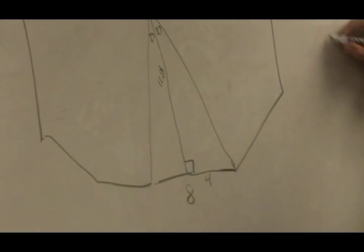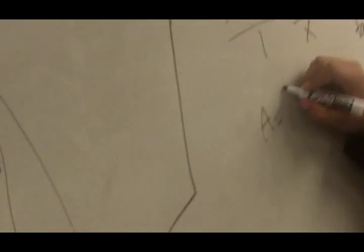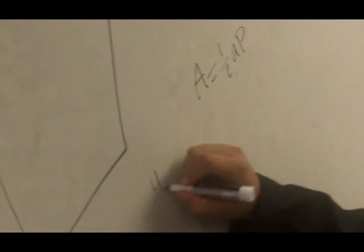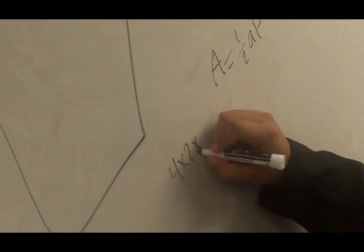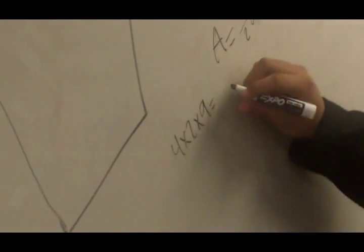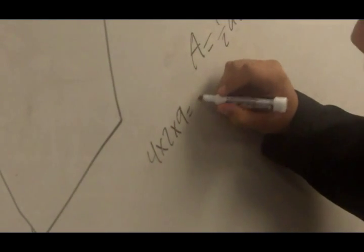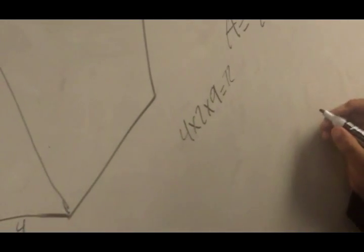Since the area equals one-half AP, I multiply 4 times 2 times 9 to get 72. So that equals the perimeter.